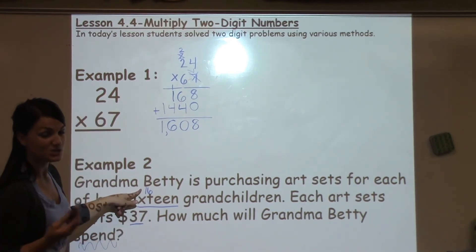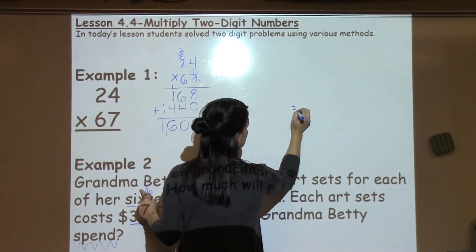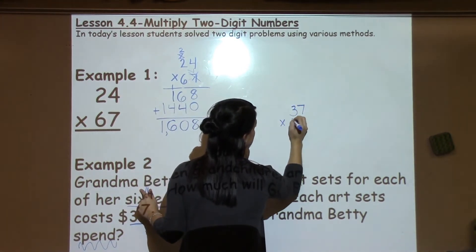But she's got 16. So that's a multiplication problem. And I'm going to move that work over here. So I've got 37 times 16.